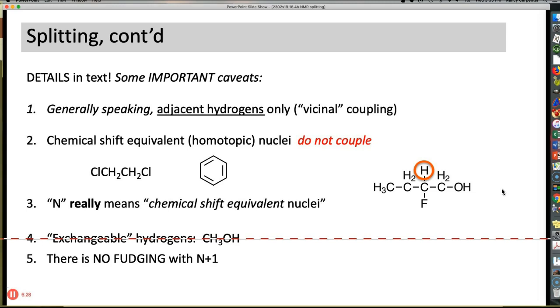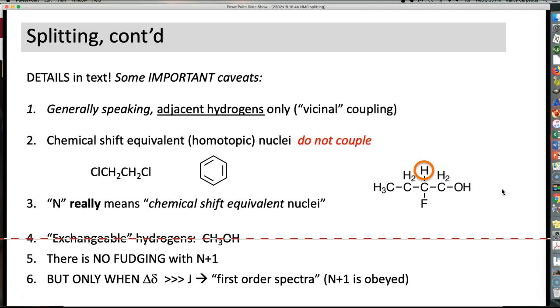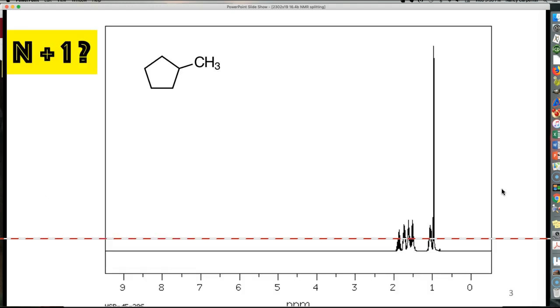Finally, N plus 1, as I alluded to, is extremely reliable, but only when the difference in the chemical shift, okay, so something like something that shows up at one part per million versus something that shows up at four part per million, is really, really big. Much, much bigger than the coupling constant. That's when you have N plus 1 splitting that looks like it should, and that's called first order spectra. So let's look at a couple more examples.